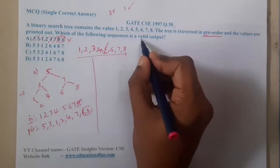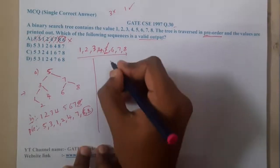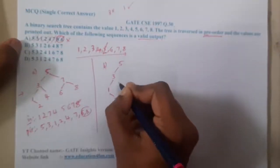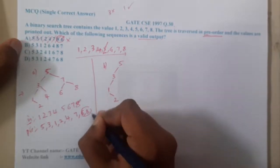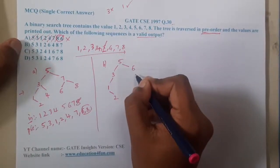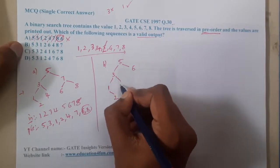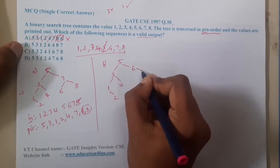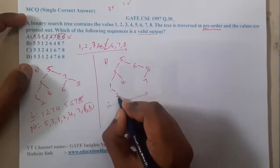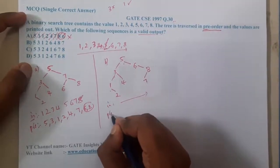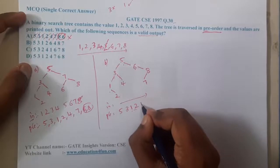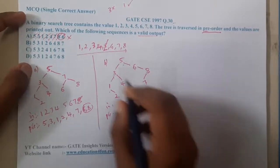Now let us construct the tree for option B. Starting with 5 as root, then 3, then 1, then 2. After that 6 on the right side, then 4 on the left of 6, then 8, then 7. In-order gives the same 1 2 3 4 5 6 7 8. Pre-order gives 5 3 1 2 — same so far — then 4 6 8 7, so the order is wrong. Option B is also wrong.